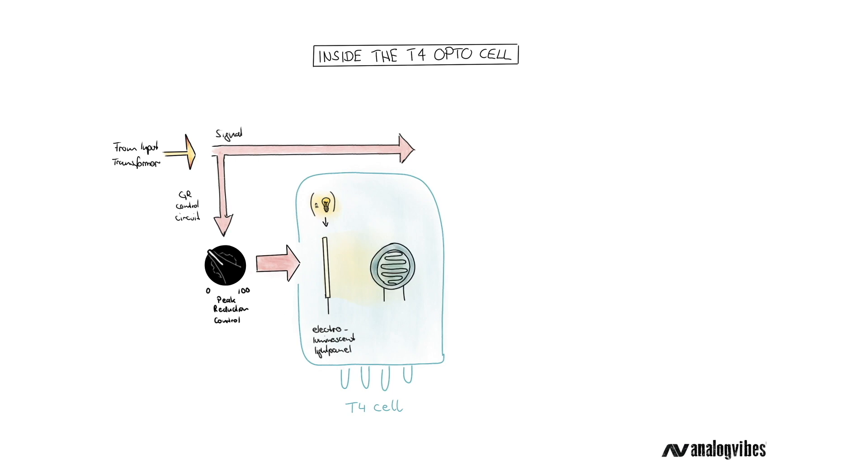Mounted directly to this panel are two photoconductive cells which act as a kind of variable photoresistor. The more light they receive, the lower the resistance, and the lower the resistance, the more compression.